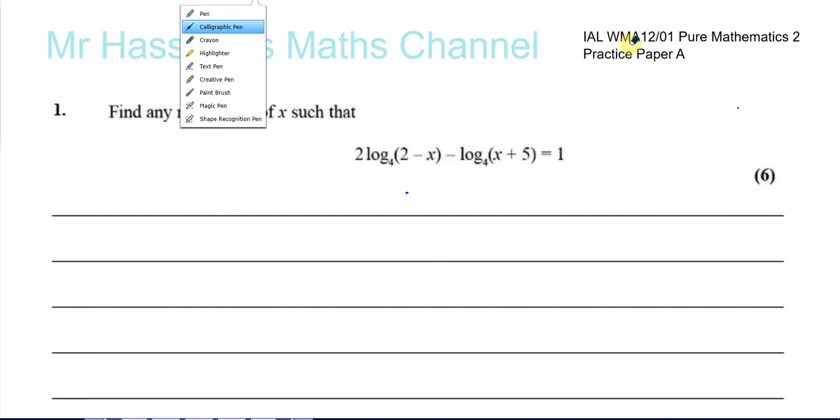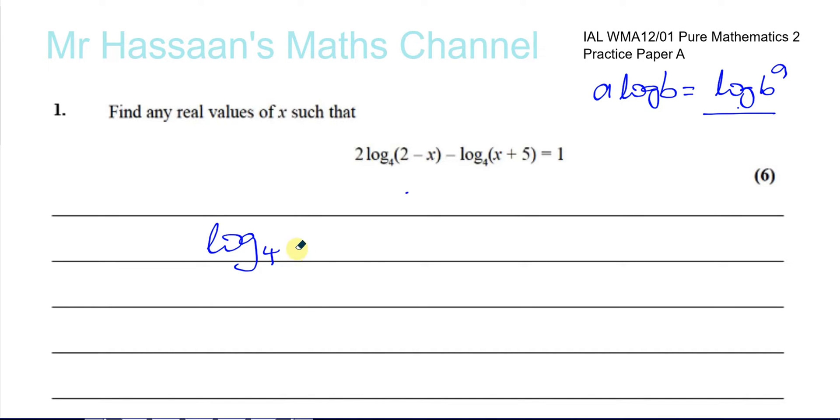So what I can use is a power law. We know, for example, A log B can be written as log B to the power of A, to any base whatever it is. So that can be written as log to the base of something B to the power of A. So that 2 can go up there, so I can write this as log to the base 4 of (2 - x)² minus log to the base 4 of (x + 5) equals 1.